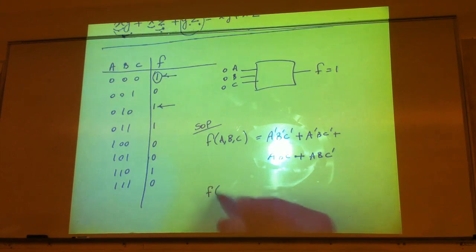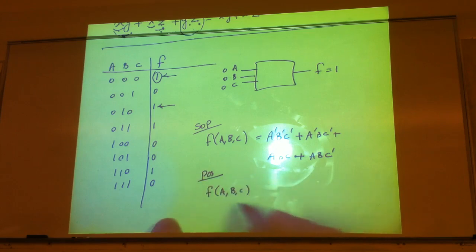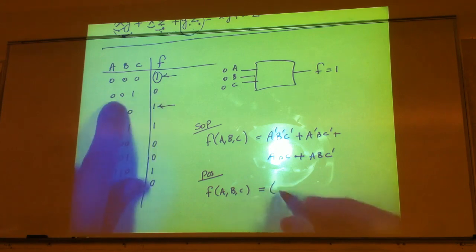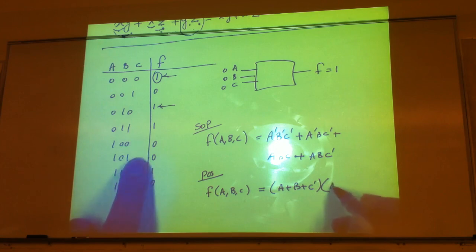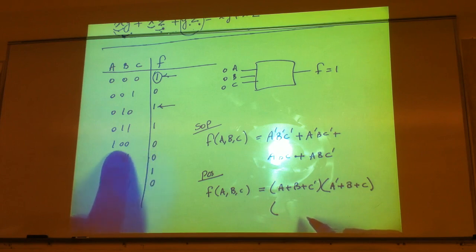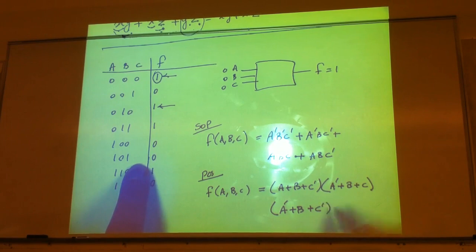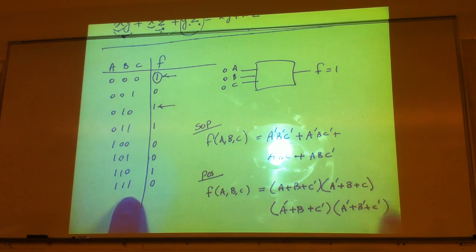Now for the product-of-sums form: the first max term is a plus b plus c-prime. In this case we assume a equals 0, b equals 0, and c equals 1 — exactly the opposite of min terms. We want our function to be 0 if we apply this. So we write a plus b plus c, then a-prime plus b plus c-prime, and then a-prime plus b-prime plus c-prime.